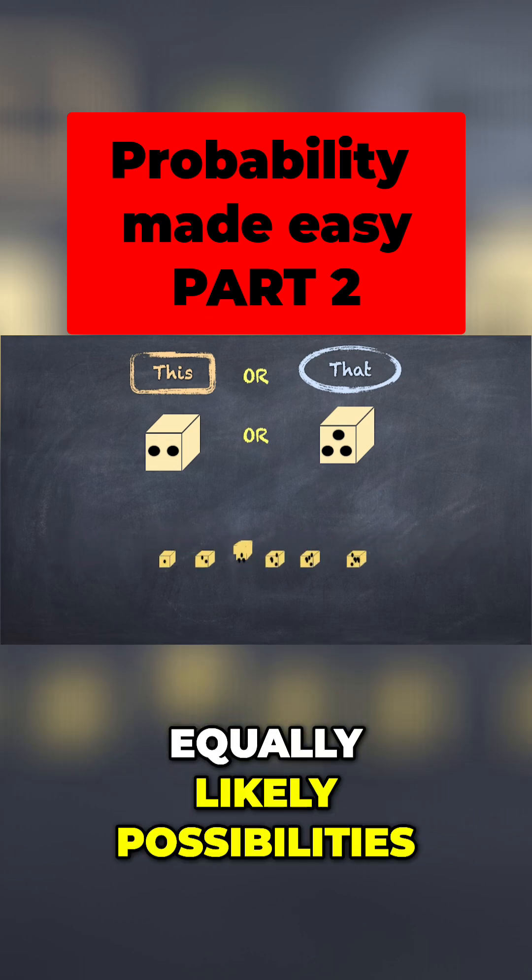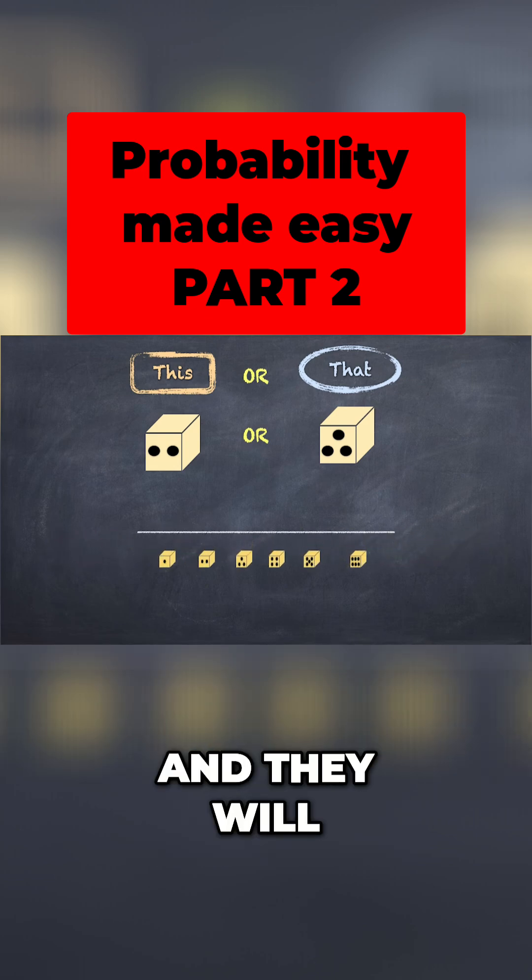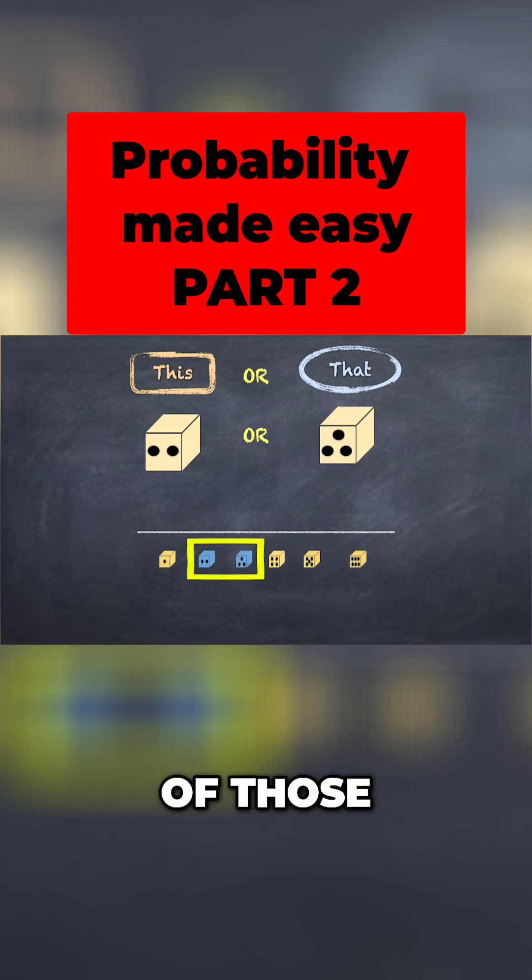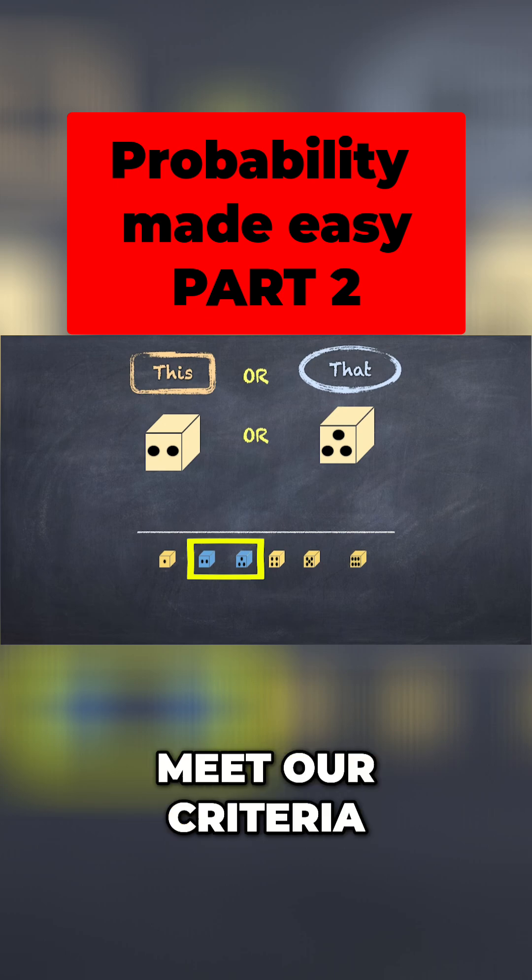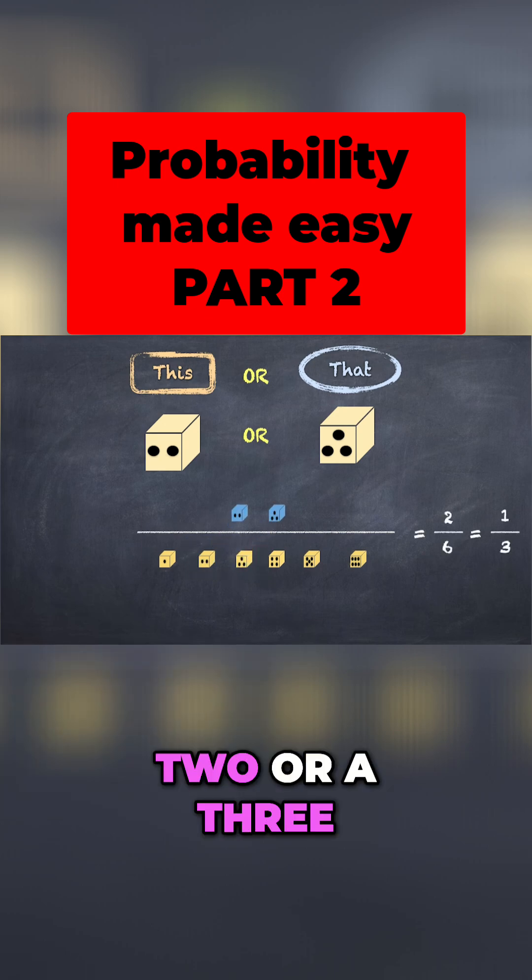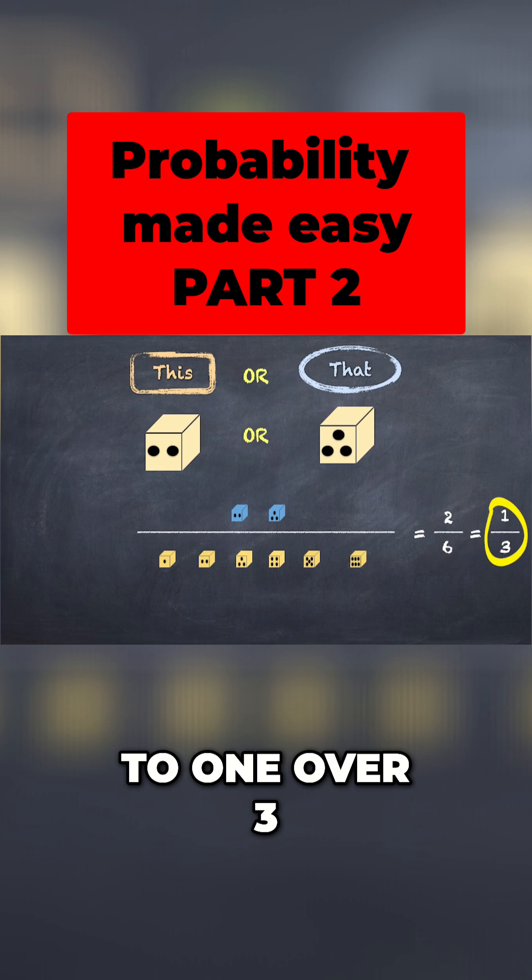Once again, there are six equally likely possibilities, and they will be our denominator. Of those, two possible outcomes meet our criteria. So the probability of rolling a 2 or a 3 is 2 over 6, which is equal to 1 over 3.